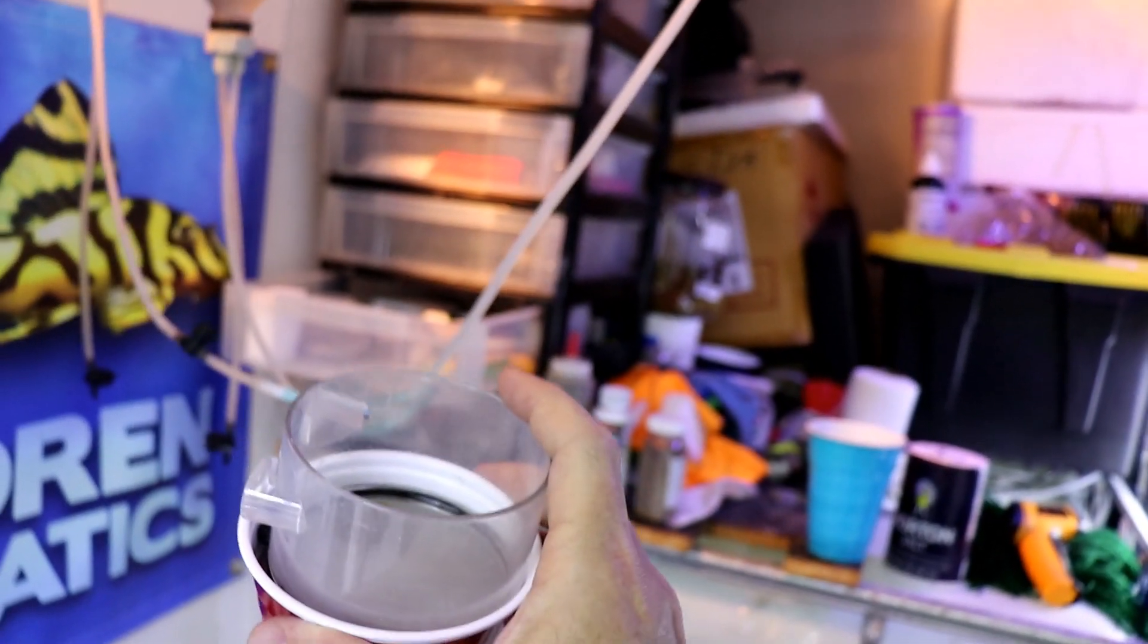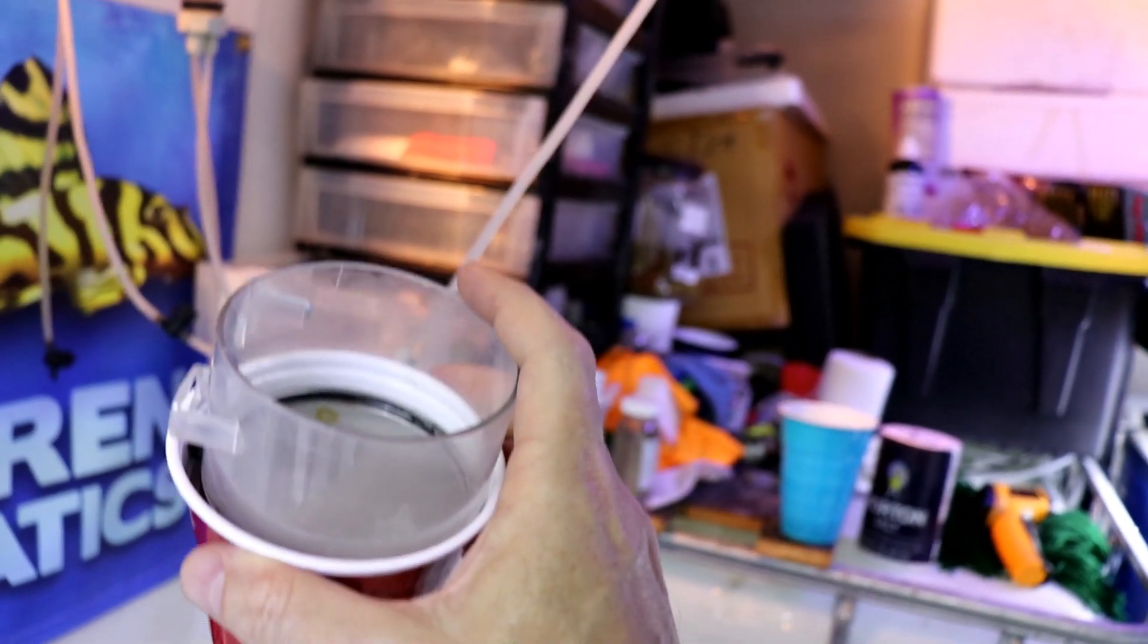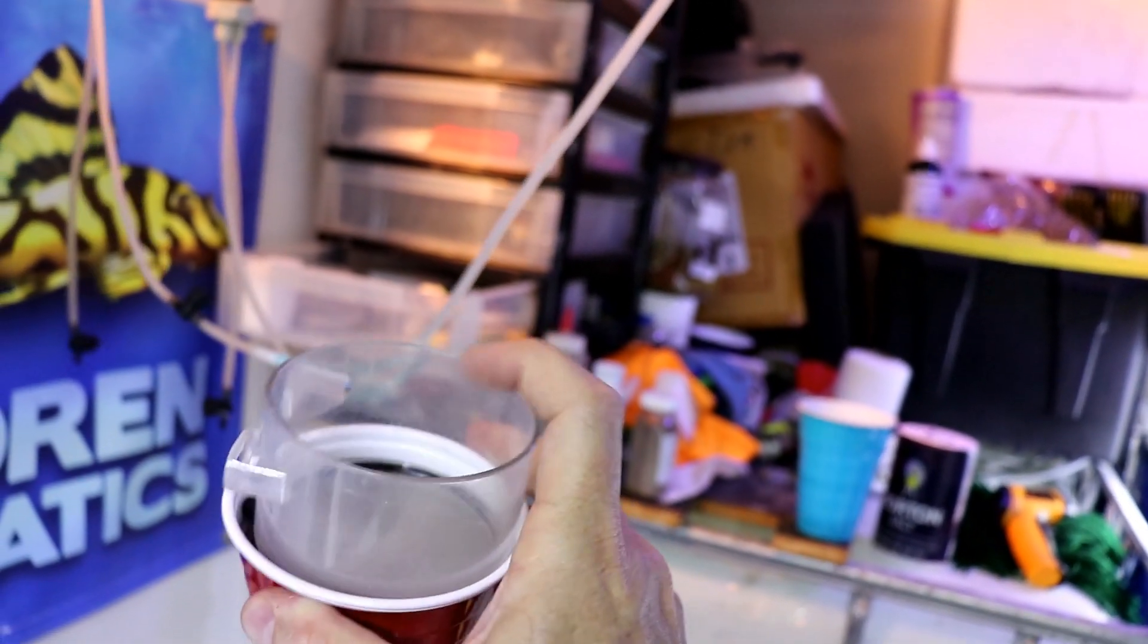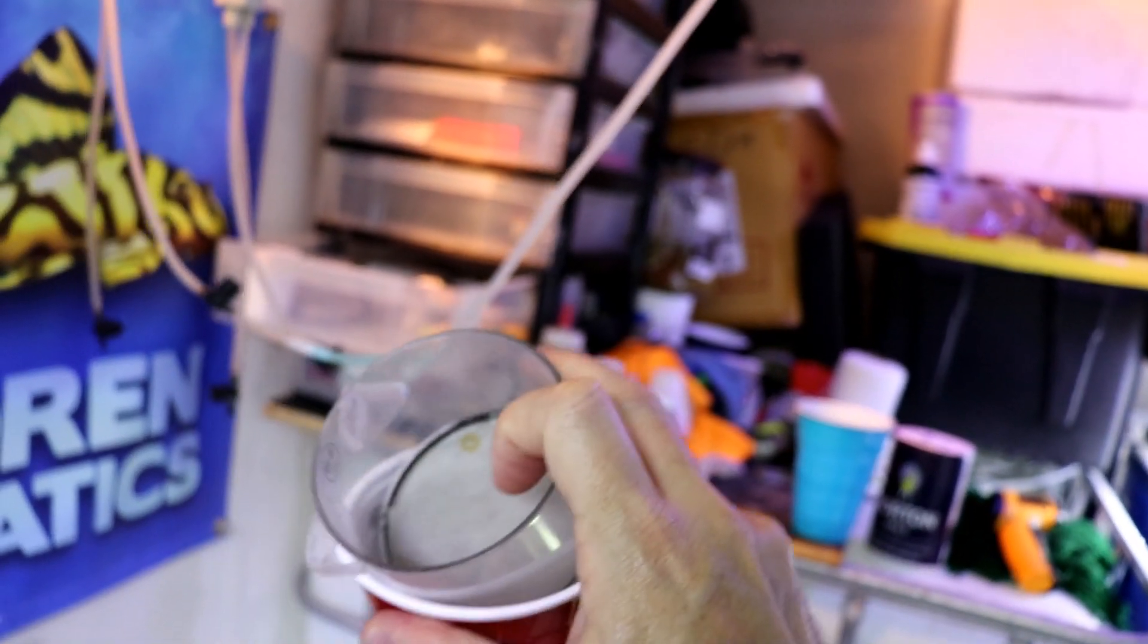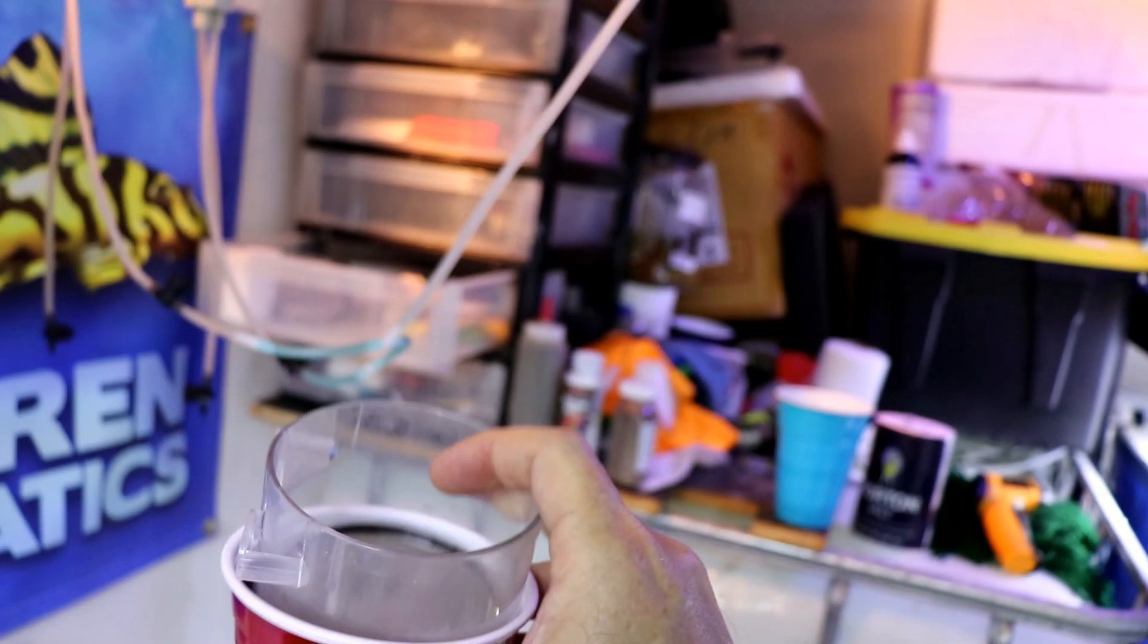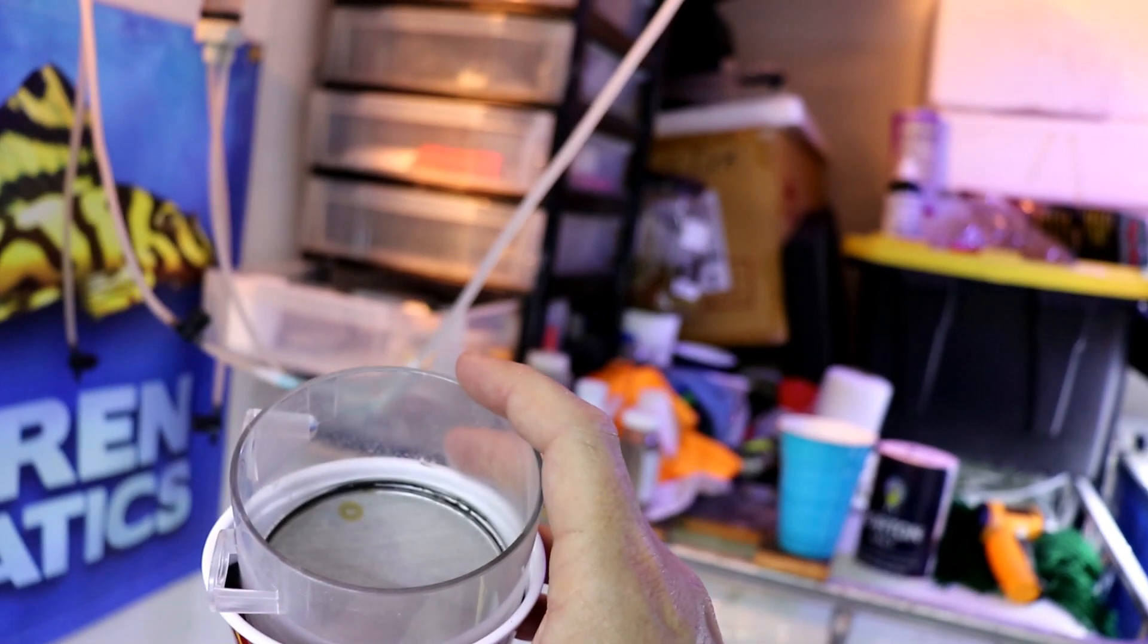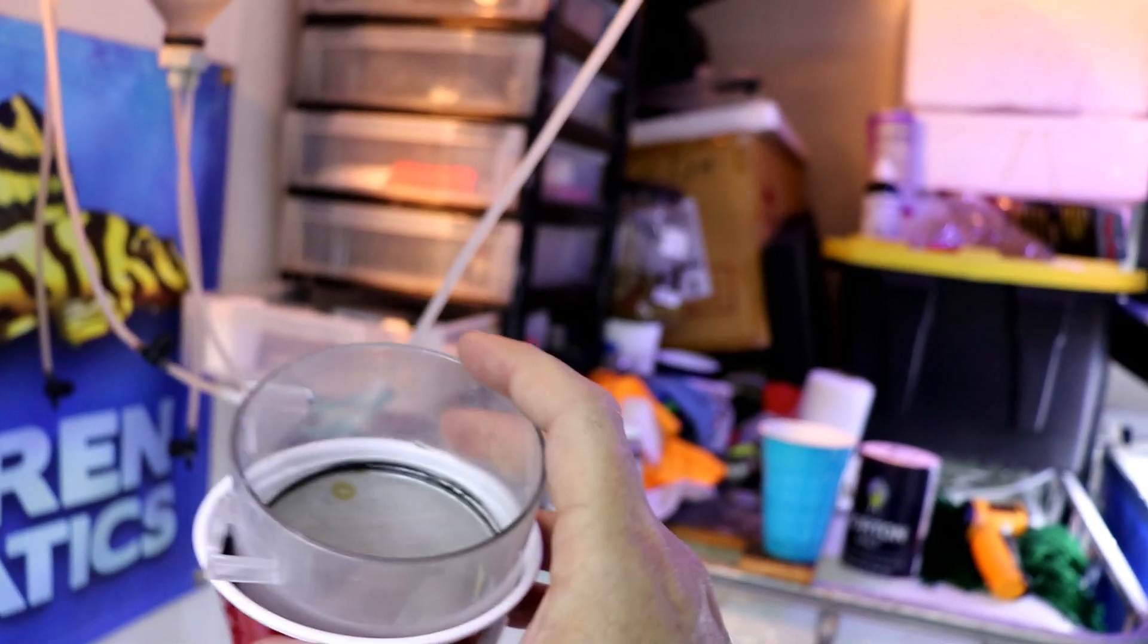Once I've gotten all that salt off, I'll then take this and pour this into another one of these empty solo cups and then put a little bit of that tank water that I'm gonna use in there. That way it kind of dilutes it out so I can then feed it to the fry.